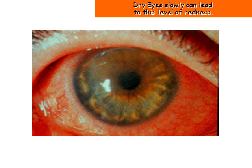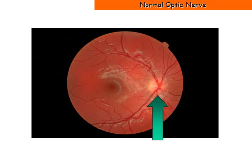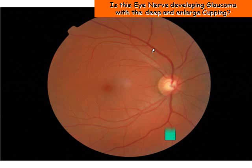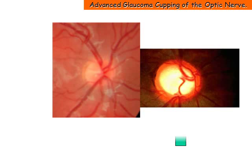As you can see, dry eyes slowly can lead to this level of redness. This is a normal view of the inside of one's eye. The eye nerve is the white round area. Is this eye nerve developing glaucoma with the deep and enlarged cupping?